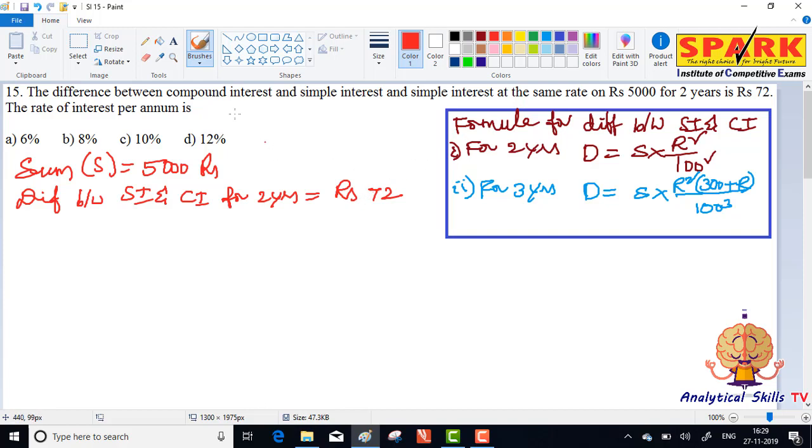For this 2-year difference, we use the formula: difference is equal to sum into r square by 100 square.